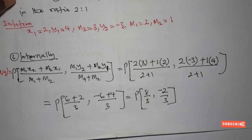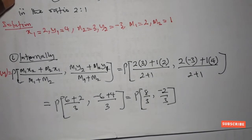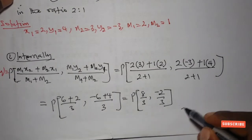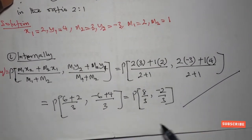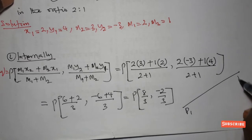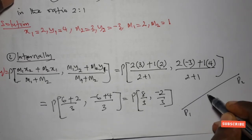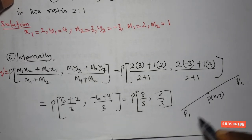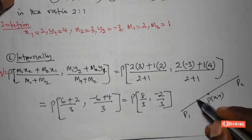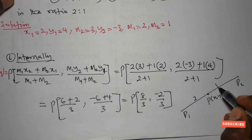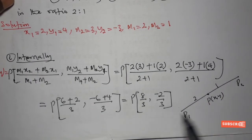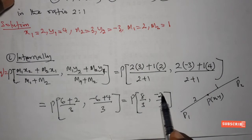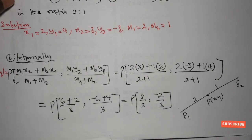So for internal division of the line segment, we have points P1 and P2, and the point P that divides the line segment internally in the ratio 2:1 has coordinates (8/3, -2/3).